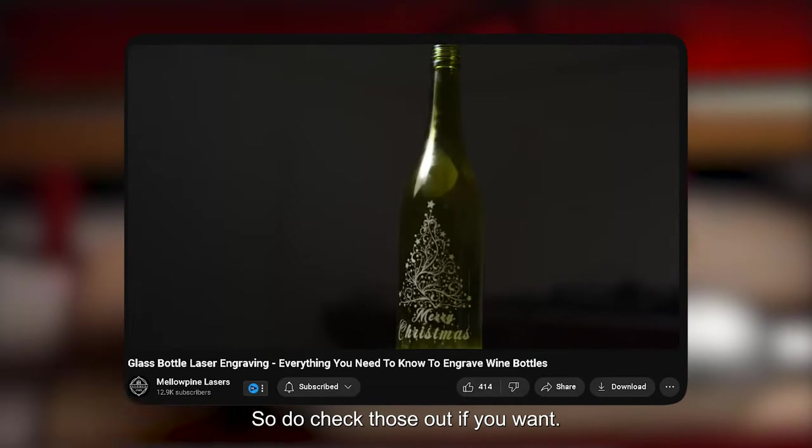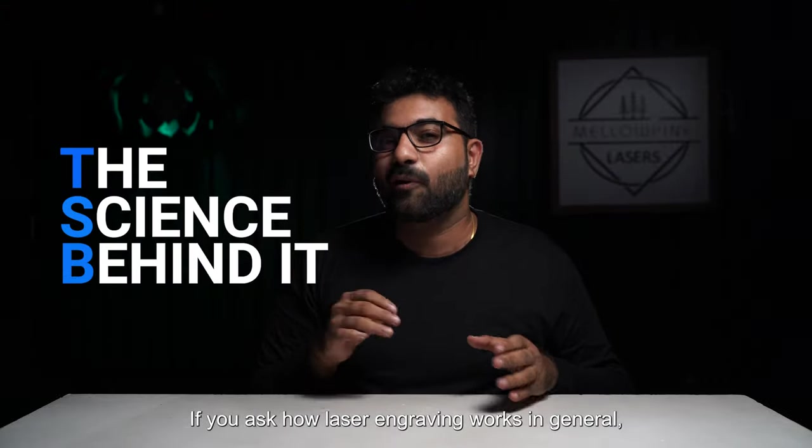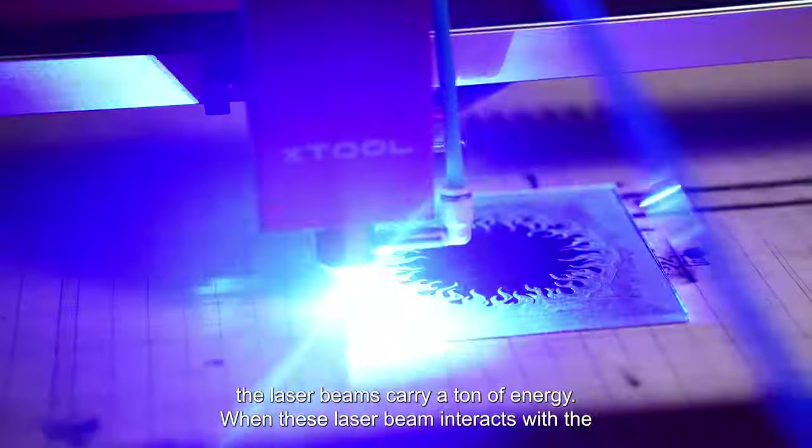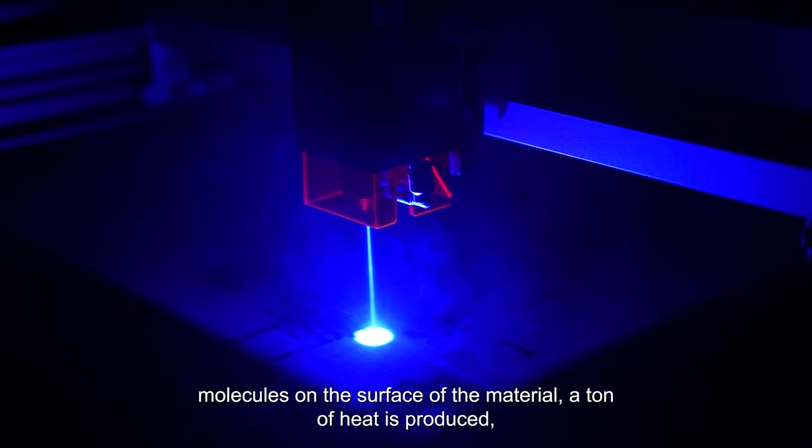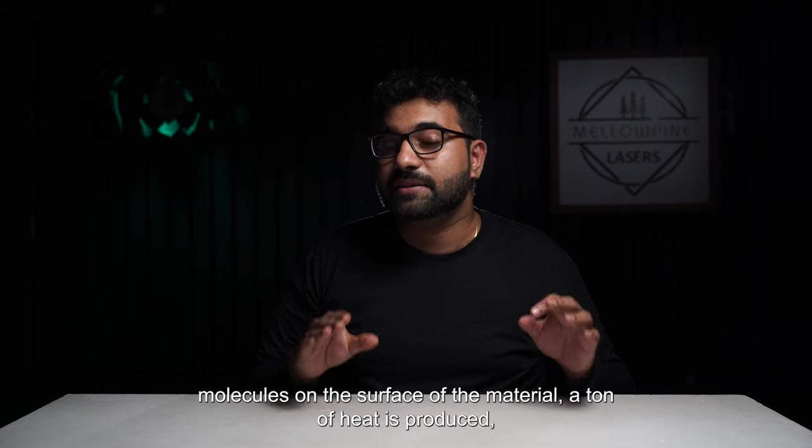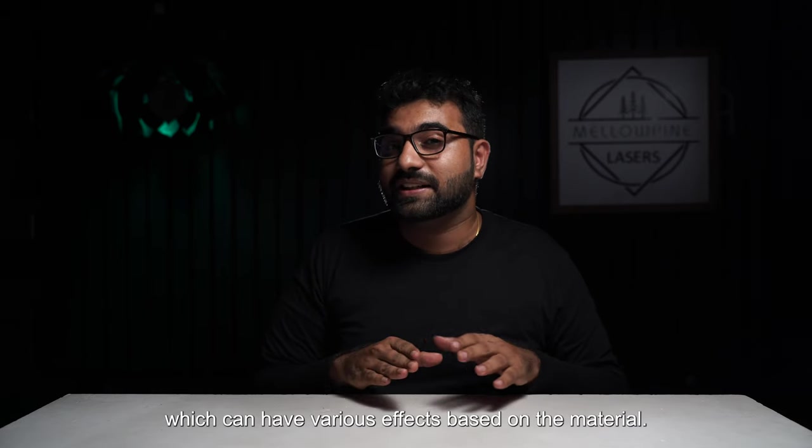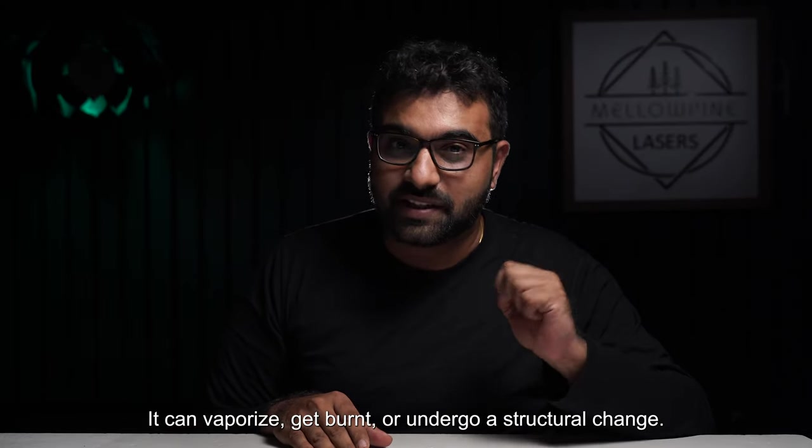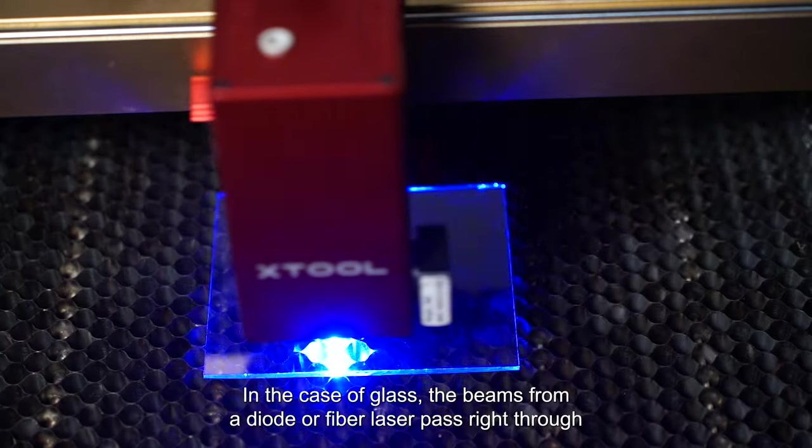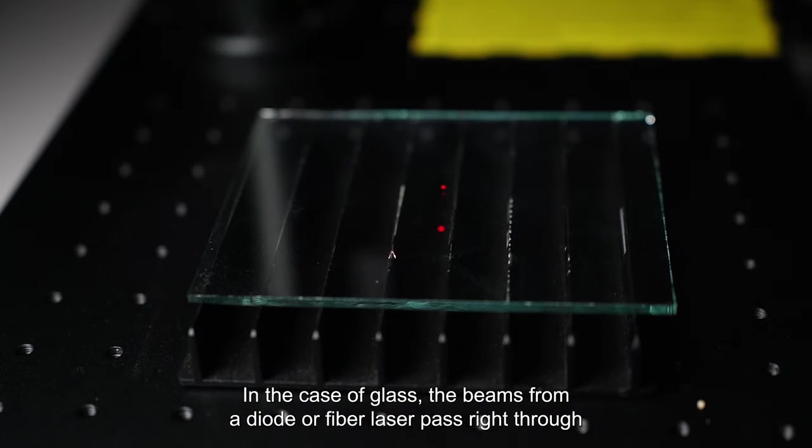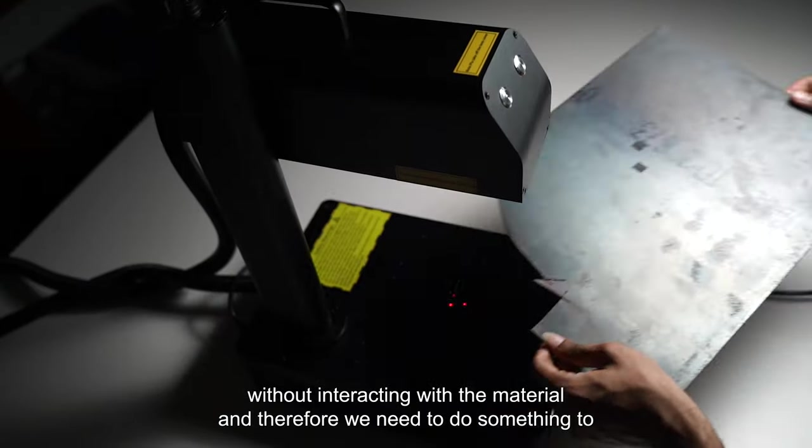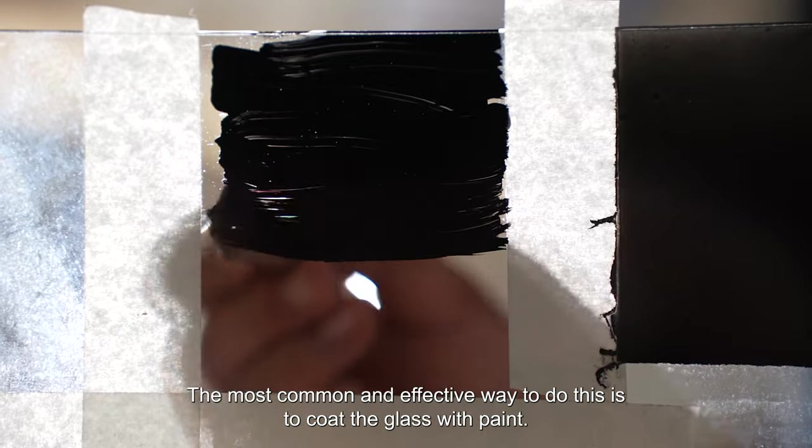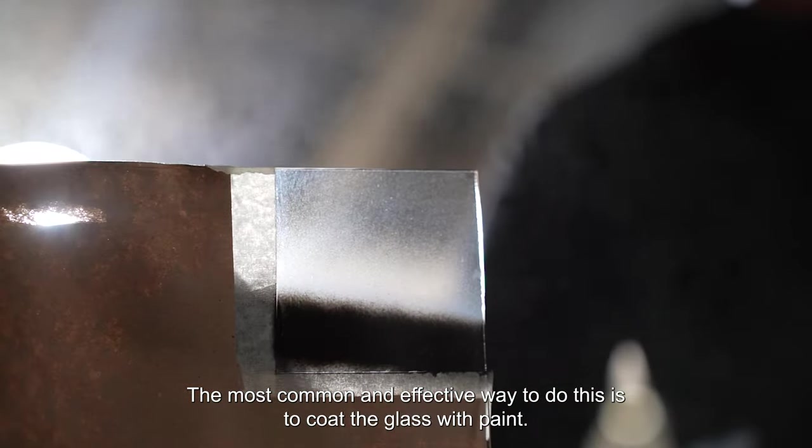If you ask how laser engraving works in general: laser beams carry a ton of energy, and when these laser beams interact with the molecules on the surface of the material, a ton of heat is produced which can have various effects based on the material. It can vaporize, get burnt, or undergo a structural change. In the case of glass, the beams from our diode or fiber laser pass right through without interacting with the material, and therefore we need to do something to make the beam interact with the glass.